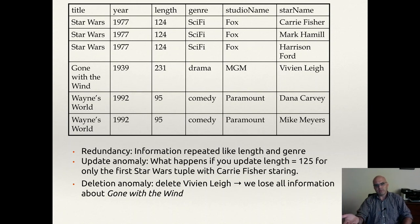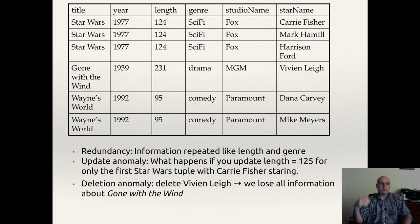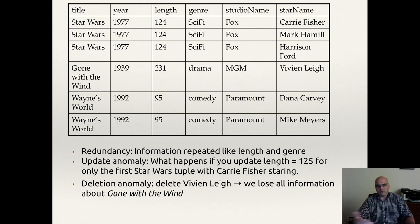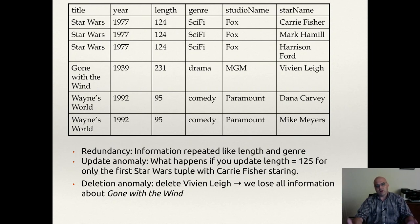What happens now if we do an update? If we update the length of the first Star Wars row — say we change 124 for the Carrie Fisher row to 125 — but that doesn't change the Mark Hamill or Harrison Ford rows, so they're still 124. If you come back at some future date and look at this data, how do you know which one's correct? Similarly, if I change the genre on one row to action instead of sci-fi, it's a problem. Update anomalies happen because we have redundant data and haven't decomposed correctly.